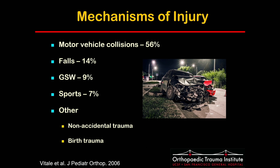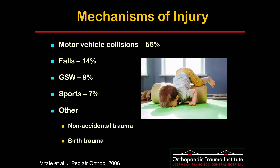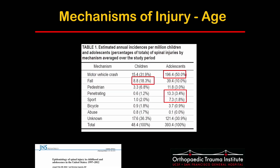Despite advances in automotive engineering, seatbelt use, and drunk driving laws, motor vehicles still account for the highest proportion of pediatric spine injuries. Unlike adults, falls also account for a large portion of injuries, followed by gunshot wounds and sports injuries. Whenever you see a pediatric injury, you need to keep in mind the possibility of non-accidental trauma. There are differences in mechanisms based on age, with adolescents mirroring adult patterns while children have a higher proportion of falls.